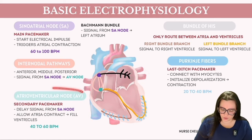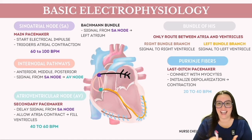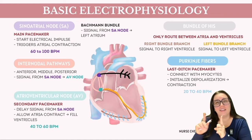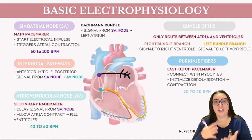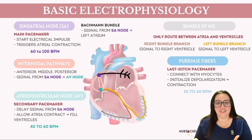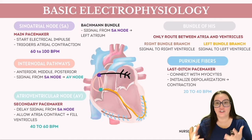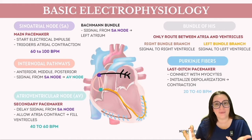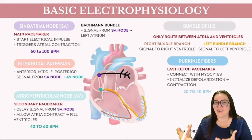The atrioventricular node, also known as the AV node, is situated in the right atrium, closer to the coronary sinus and the tricuspid valve. This cluster of specialized cells momentarily pauses the electrical signal from the SA node before it proceeds to the ventricles. This intentional delay provides sufficient time for the atria to contract and ensures the ventricles are fully filled before they contract. Blood supply for the AV node comes exclusively from the right coronary artery.